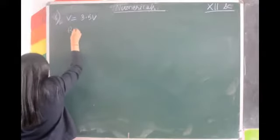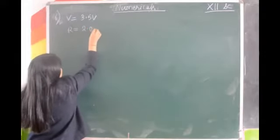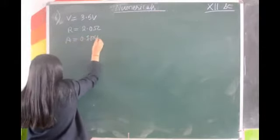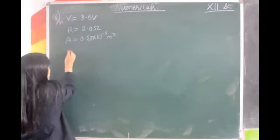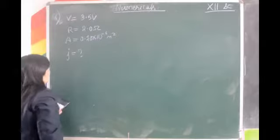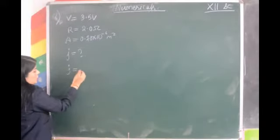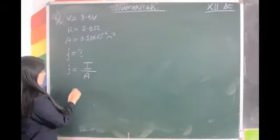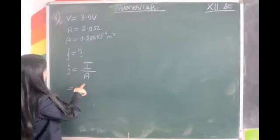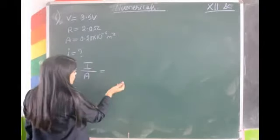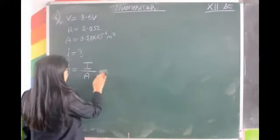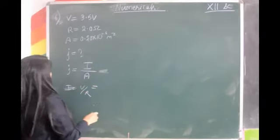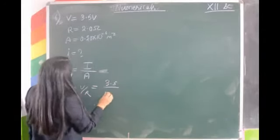The resistance of the wire is 2 ohm and the area of cross-section of the wire is 0.70×10⁻⁶ m². We have to find the current density J. To find the current density, J equals current divided by area. We have A but we don't have I. So from Ohm's law, I equals V by R. Let us first find I: I equals V by R.